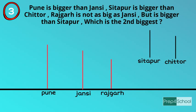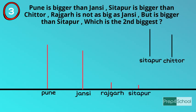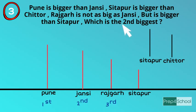But Rajkar is bigger than Sitapur, meaning Sitapur is smaller than Rajkar. Now combining, the order is Pune > Jansi > Rajkar > Sitapur > Chitor. The question is which is the second biggest. It is clear that Pune is the biggest, so the second biggest is Jansi.